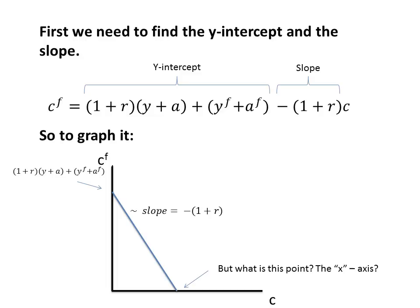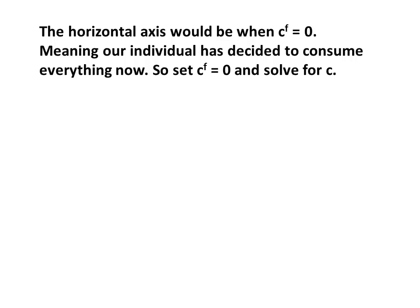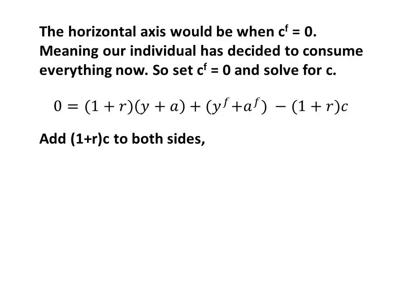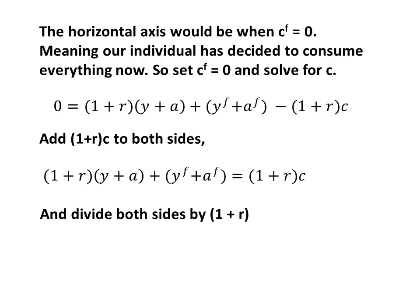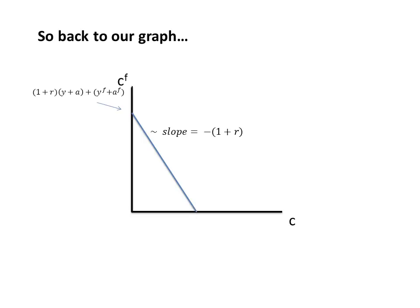What about the X-axis intercept — when our future consumption CF is equal to zero? The horizontal axis intercept is when future consumption equals zero, meaning the individual has decided to consume everything now. So we can set CF equal to zero and solve for C. We add (1+R) times C to both sides, then divide both sides by (1+R). We end up finding that current consumption is equal to current wealth and income plus a discounted value of our future wealth and income. So now we know both the CF intercept and the C intercept for our graph.